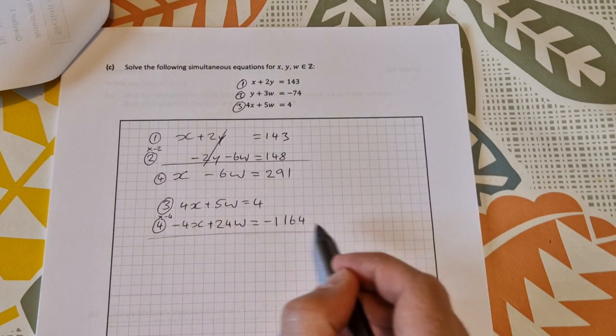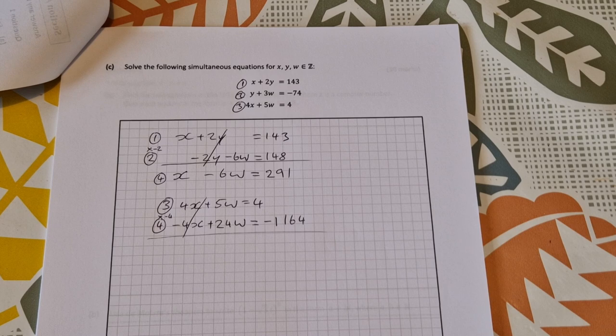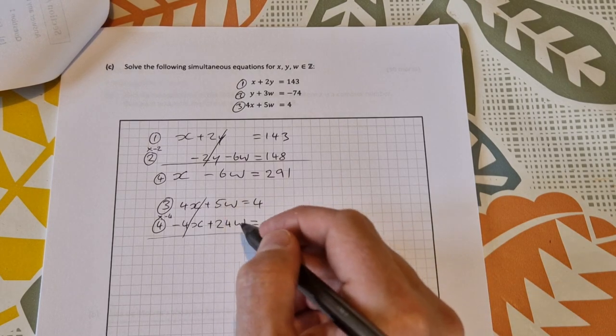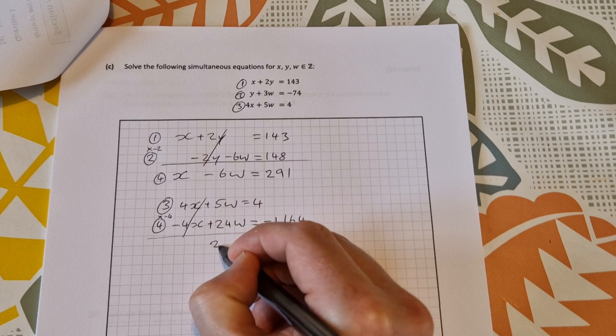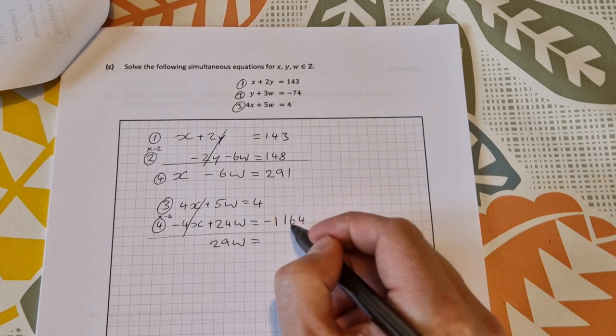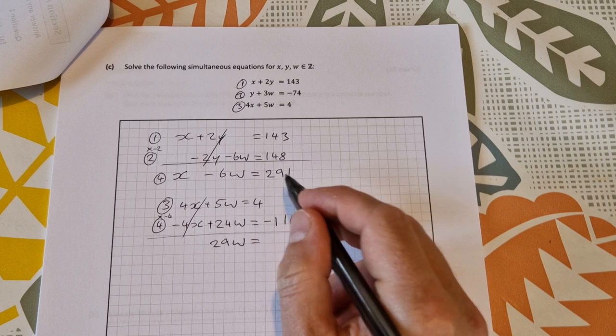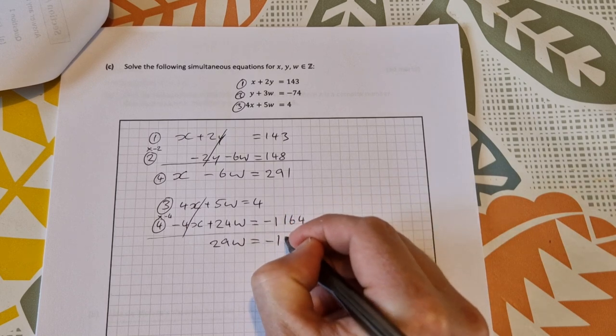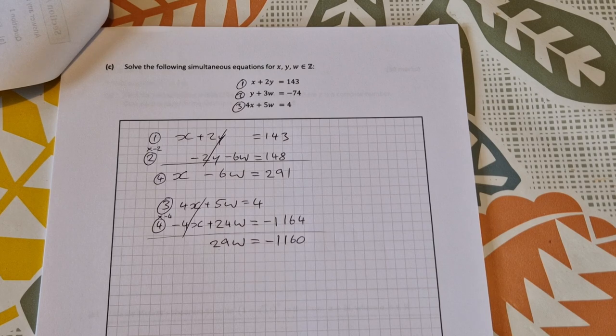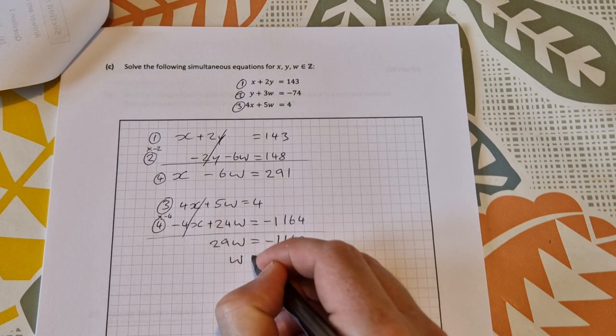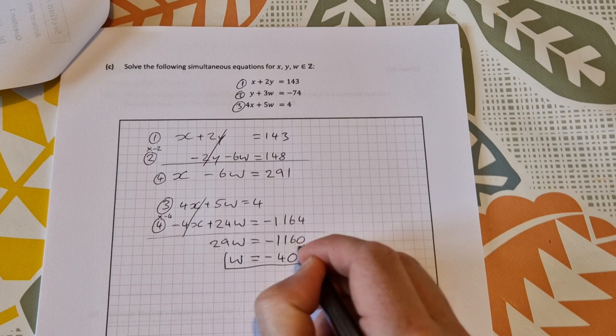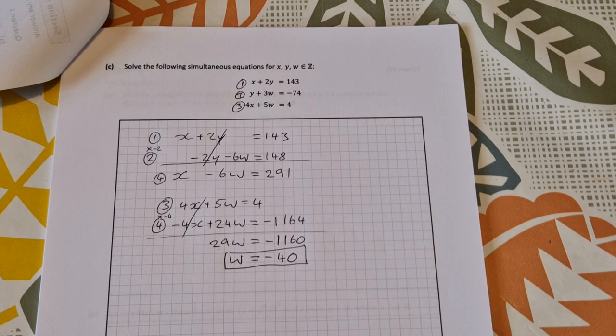So we can see that the x's cancel. 4x minus 4x is 0. I have 5w plus 24w which is 29w is equal to minus 1,164 plus 4. So we have our first unknown there. W is equal to 40.